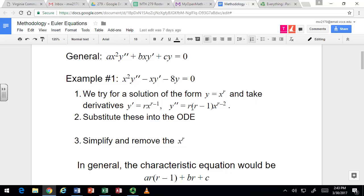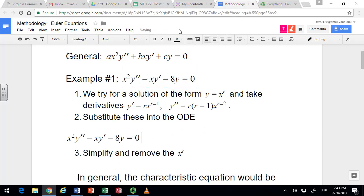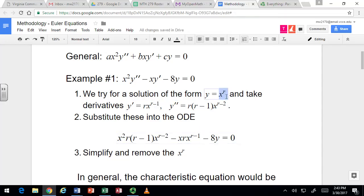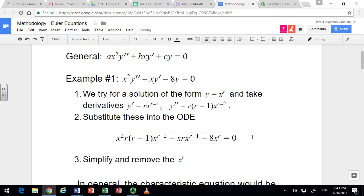So let's go ahead and substitute these into the differential equation and hopefully we'll get an algebraic equation for r. Alright, so second derivative goes here and first derivative goes here and x to the r is here. Now because of the pattern with x squared and the second derivative and x and the first derivative, you're always going to get x to the r in every term.